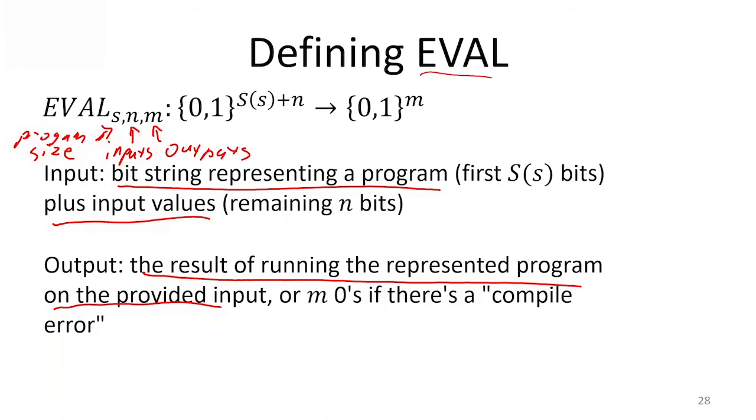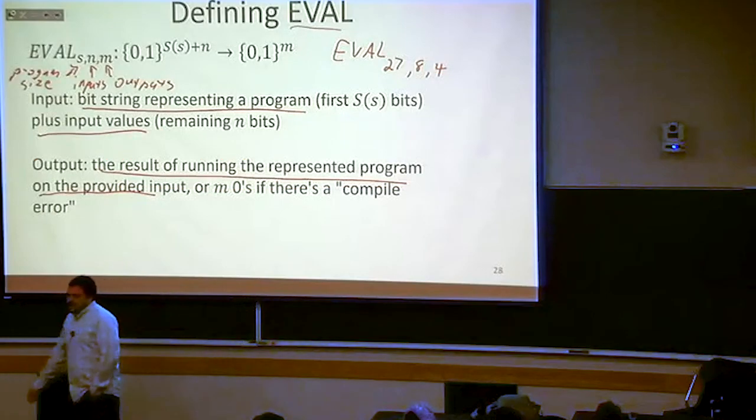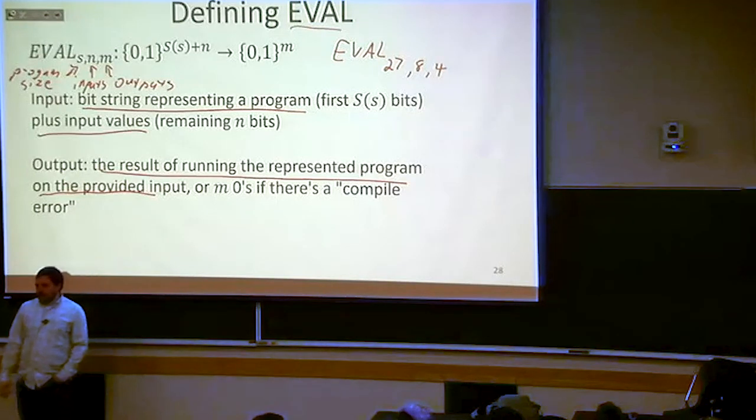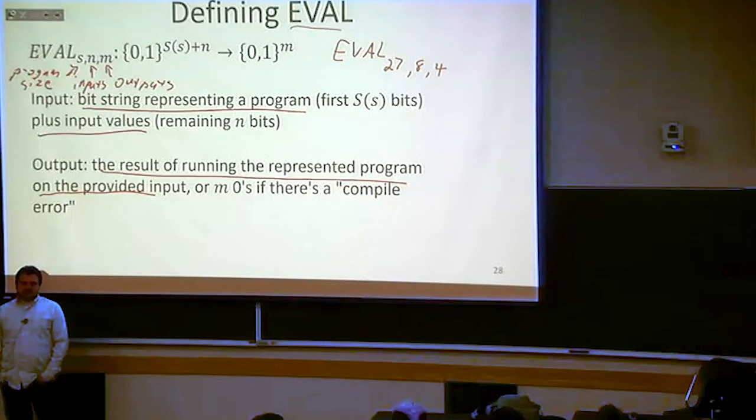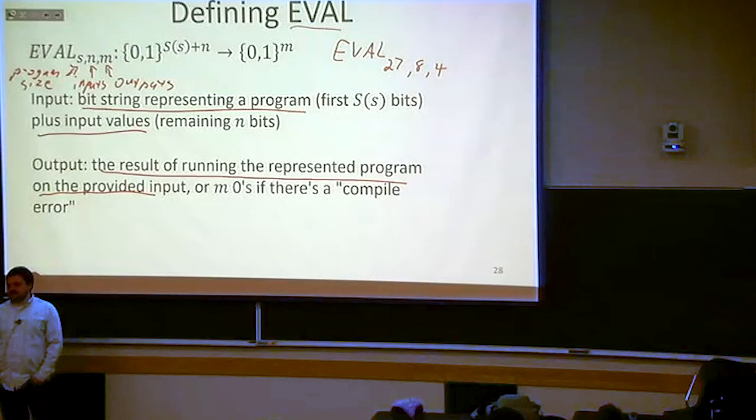We're going to be defining a function, this function eval. If we said we had eval_27,8,4, or something like that, this is a function where no matter what program I give this function as input, so long as it is 27 lines long, has 8 inputs, and 4 outputs, that eval function is going to be able to simulate the behavior of that program.